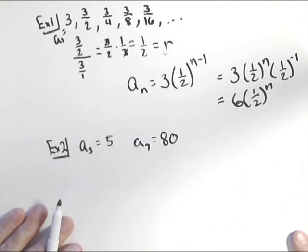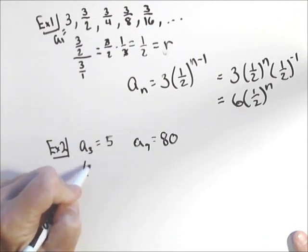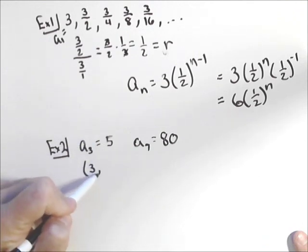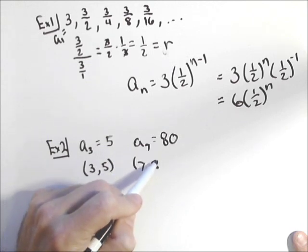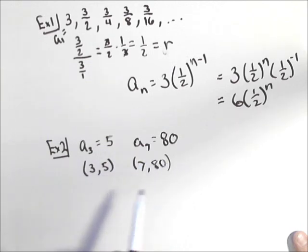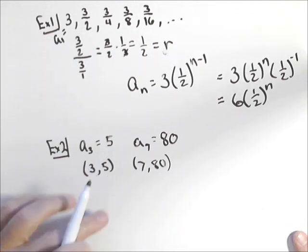Now, if all we're given is two points, we can think of these as if they were exactly that. Points three comma five, and seven comma eighty. So we want the exponential function going through these two points. So we can actually create a function for both.